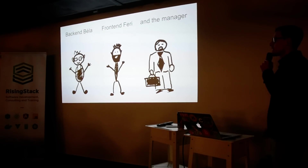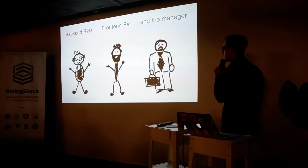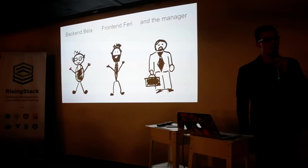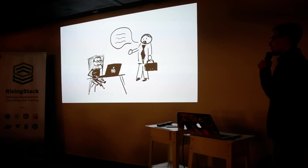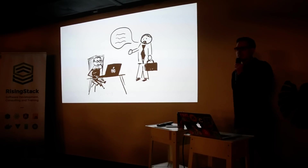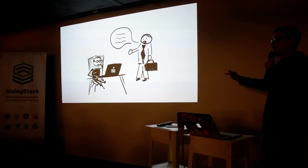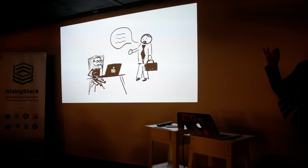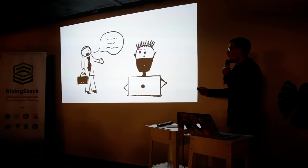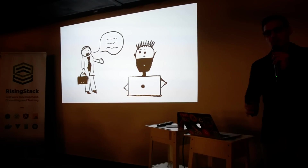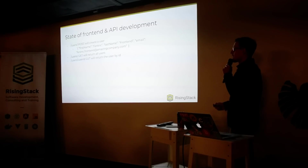In our story, we have Bela, we have Fetty, and the manager guy. They are all collaborating with each other, working as a team to achieve great things. One day the manager comes over to Bela, our backend guy, and tells him they have a totally new cool startup idea that's going to change the business. He also walks up to Fetty and says they need a user API.